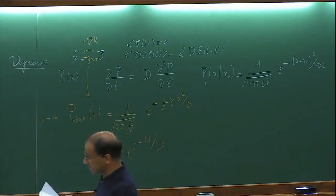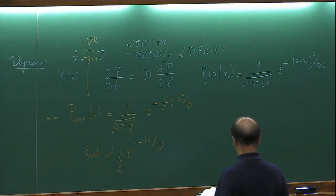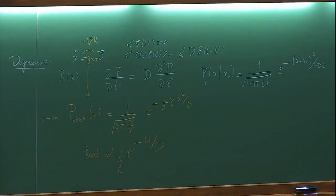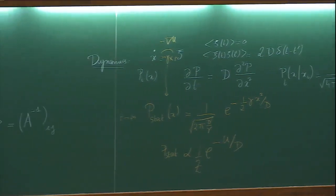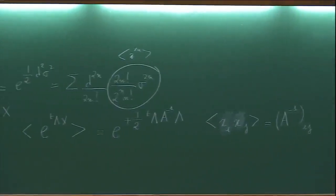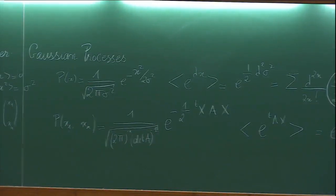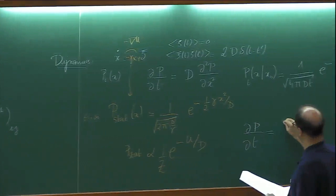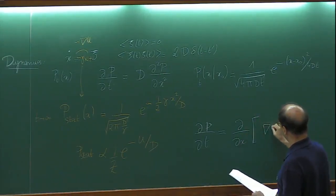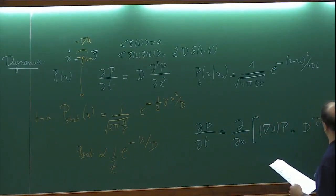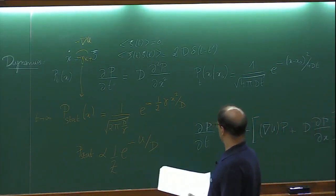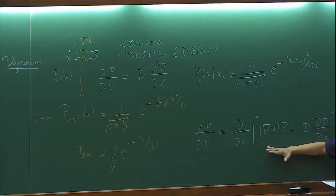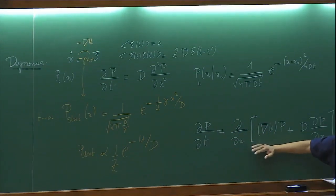Let's go to something slightly less standard: multiple variables, a vector dynamics. Consider an n-dimensional linear Langevin equation — it's again Gaussian. The noise is a white noise vector that can have correlations among its components, with autocorrelation matrix 2D_{ij} δ(t−t'). Being a linear equation, we can solve it directly by variation of constants.